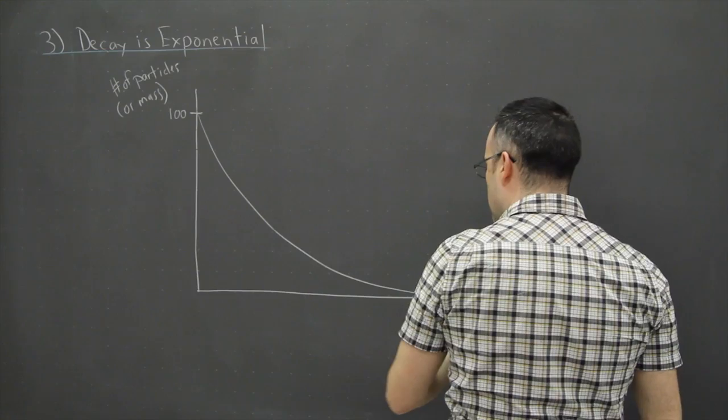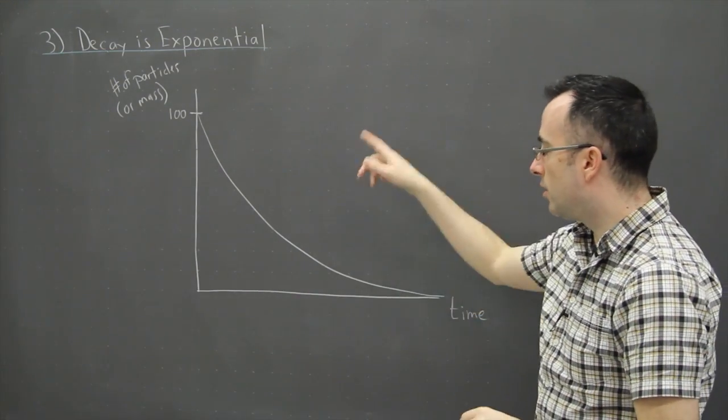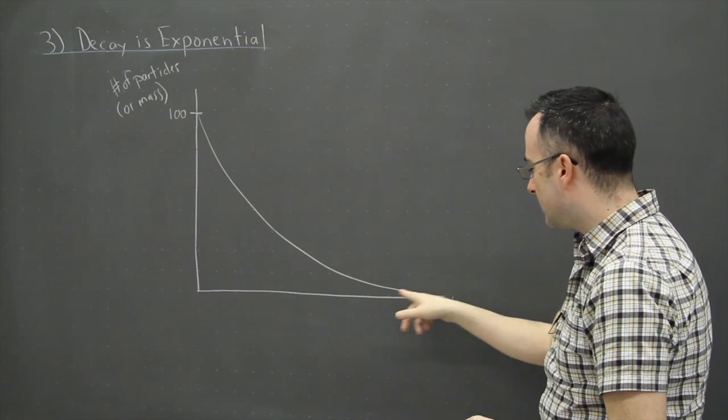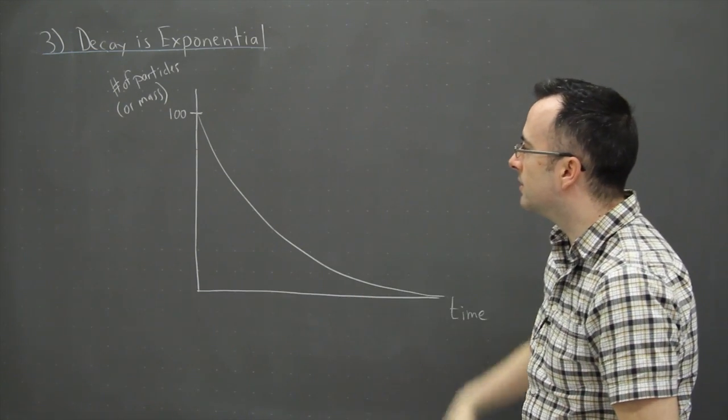So it's going to be something that goes really close to zero particles or zero mass, but never quite reaches it. We say this is an asymptote. It never quite reaches it.